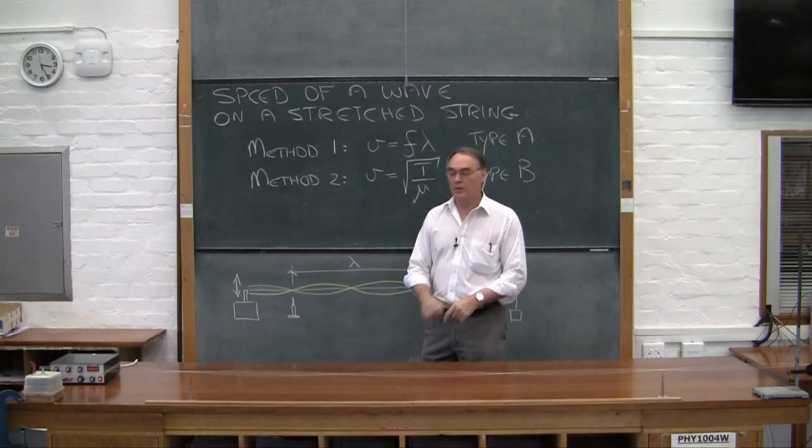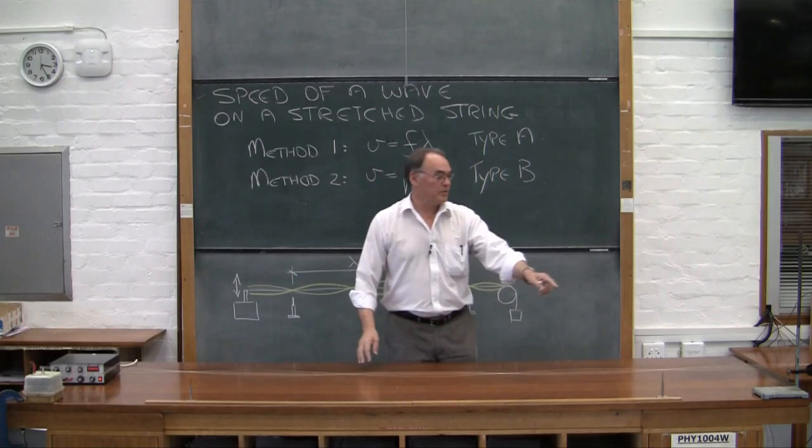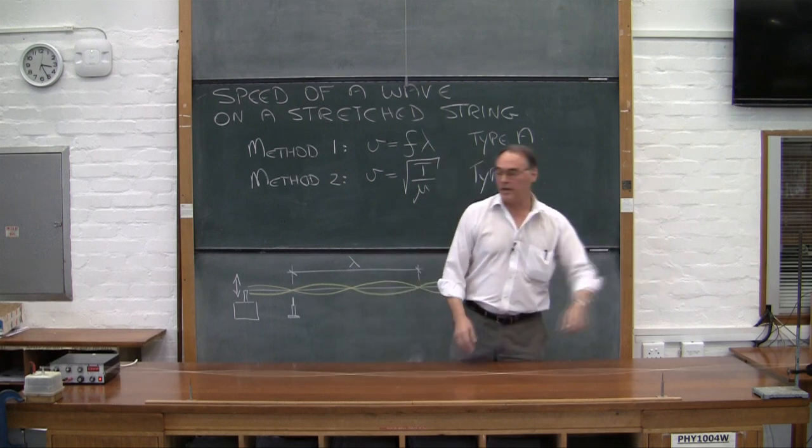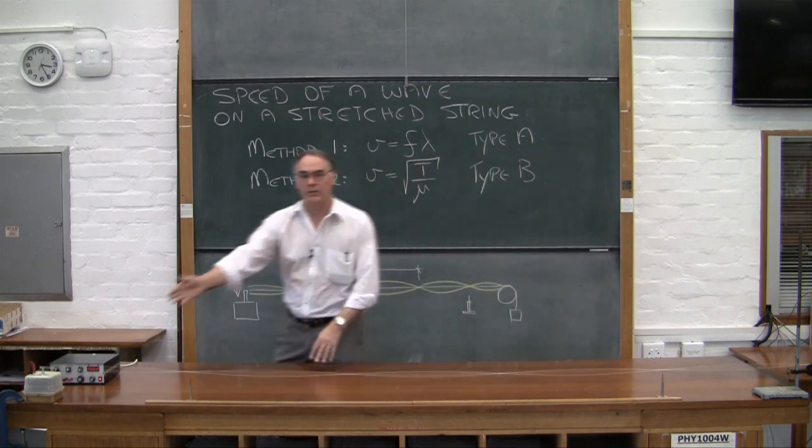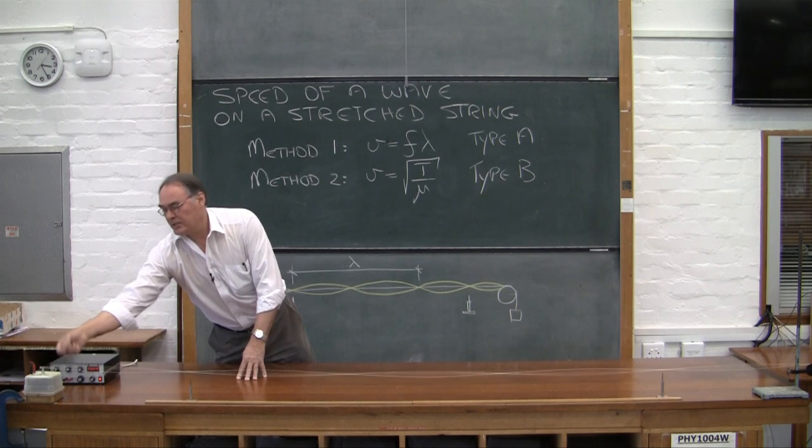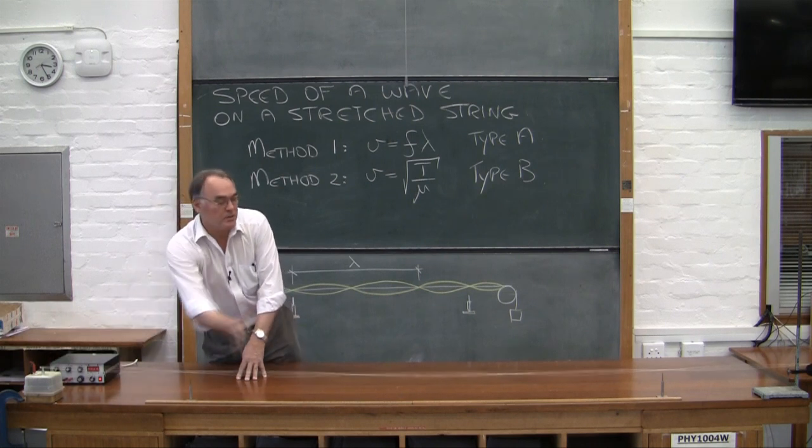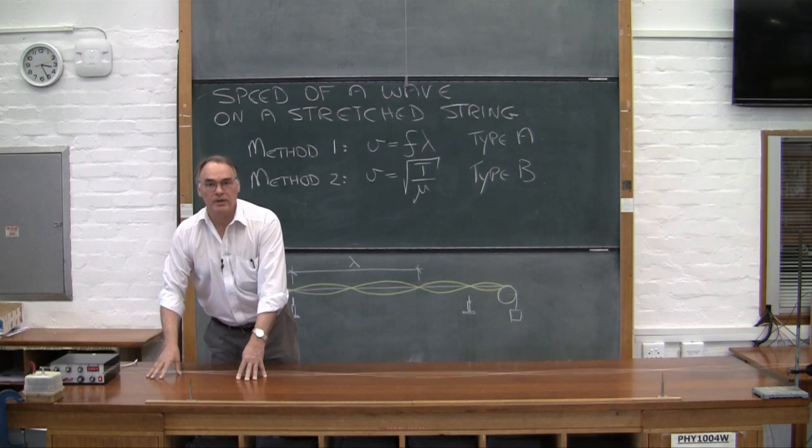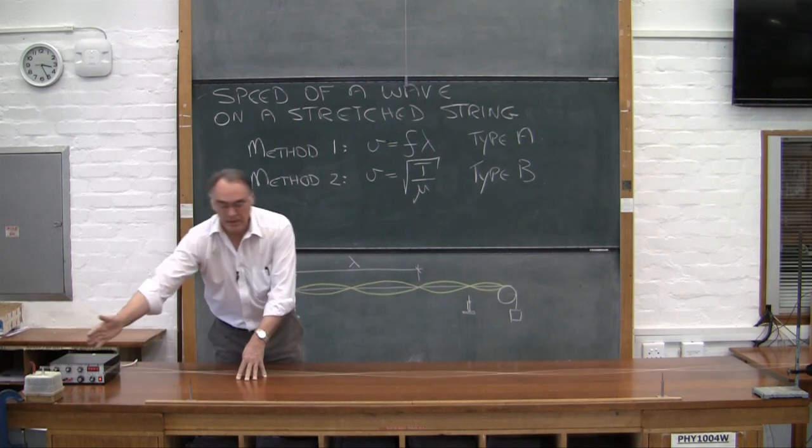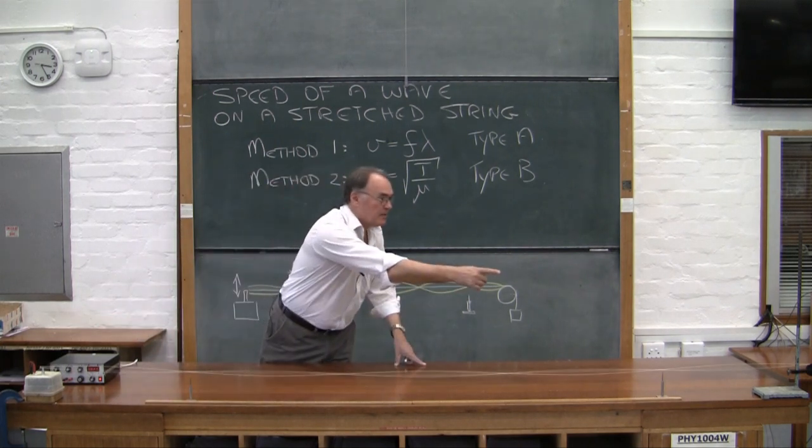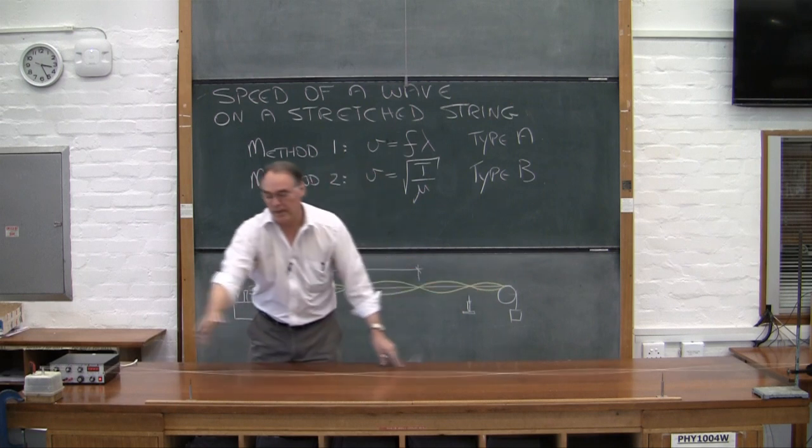To apply Method 1, we have here a length of stretched string. It's being stretched by the mass hanging over the pulley over there, and here we have an actuator. This actuator applies a constant displacement, putting a continuous train of pulses onto the string. The pulse runs down to the end boundary point and runs back.